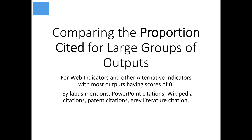This particularly applies to syllabus mentions, PowerPoint citations, Wikipedia citations, patent citations, and grey literature citations where most of the scores are zero. And any other altmetric — which is most of them except for Twitter and Mendeley — where most of the documents have a score of zero.